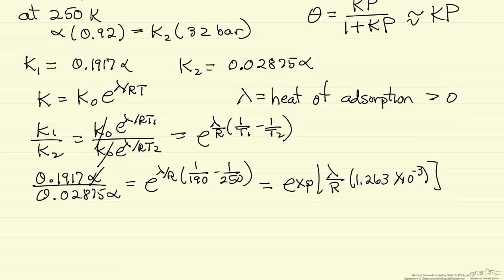So alphas of course cancel. This ratio left side is 6.667. And what I'm going to do, of course that's equal to the right side, I'm going to take the log of the left side, 6.667, it's going to be equal to the log of the right side, which then becomes lambda over R times this value.